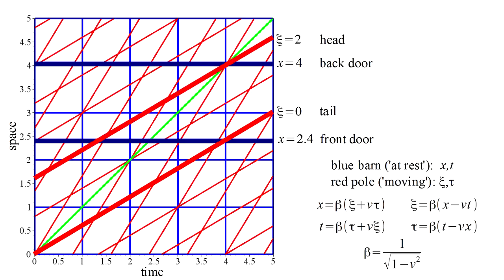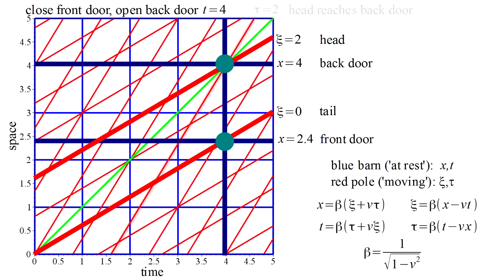In the barn frame, at time t equals 4, the pole head will coincide with the back door and the pole tail with the front door. The pole will appear to fit inside the barn. From the pole's perspective, these events happen at different times, tau equals 2 and 3.2 respectively.